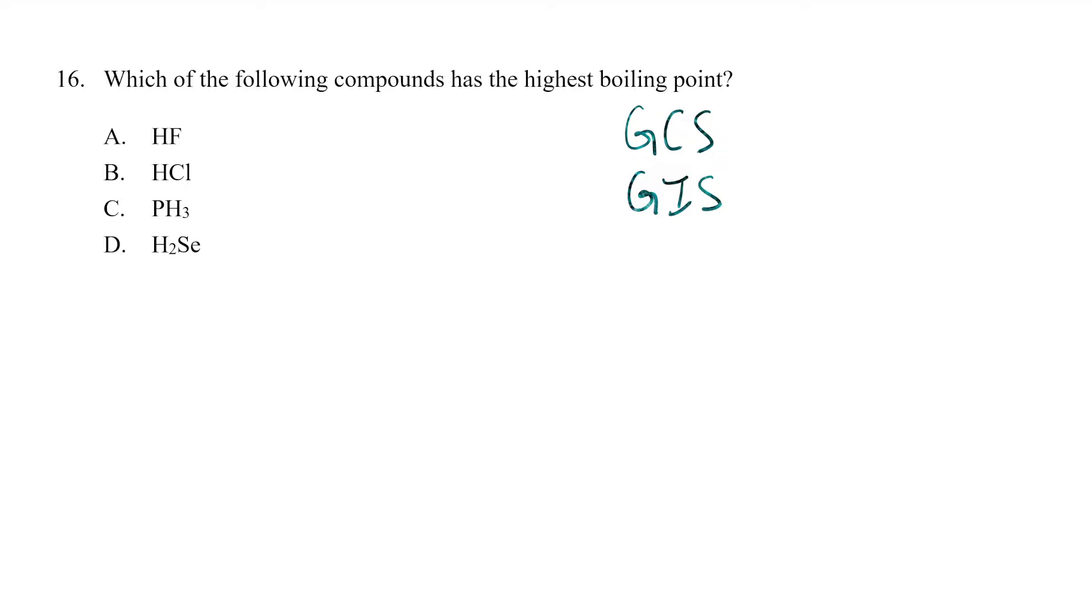Giant ionic structure and giant metallic structure - these three would have the highest boiling points. You can see none of them here because all four examples are simple molecular structures.